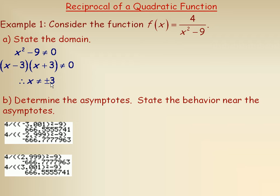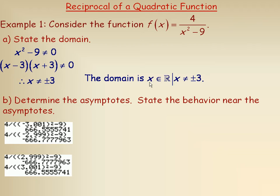Those are the numbers I cannot put in place of x, because they would make the denominator 0 and the function undefined. So the domain is the entire set of real numbers — x is a member of the real numbers, that's what the fancy capital R stands for — such that x cannot equal 3 or negative 3. x could be any other real number.